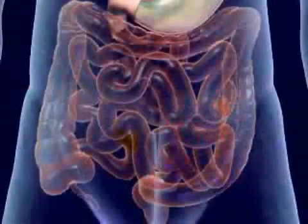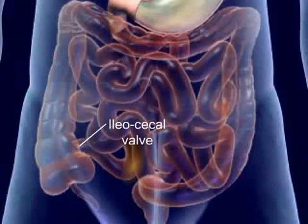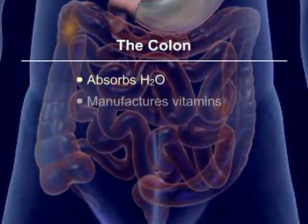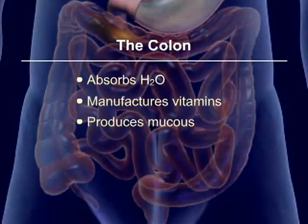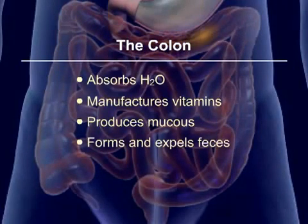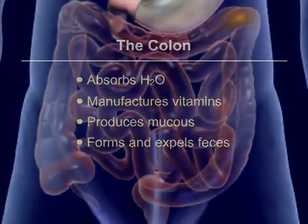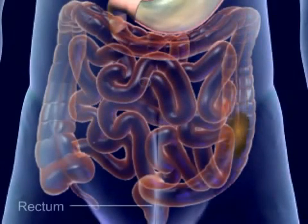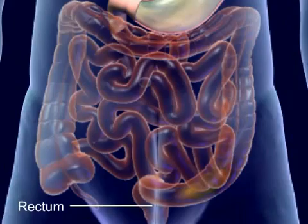The undigested food reaches the ileocecal valve and enters the large intestine or colon. The colon absorbs water, manufactures vitamins, produces mucus, and forms and expels feces. Mass peristalsis pushes the feces into the rectum, which stimulates the defecation reflex.